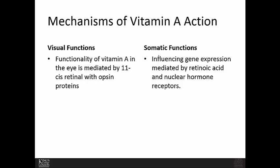The mechanisms of action for vitamin A: it was first identified as vital based on its impact on vision, and its visual functions are very well understood. The functionality of vitamin A in the eye is mediated through 11-cis retinol with the opsin protein. There are also somatic functions of vitamin A with a very large influence on gene expression, mediated by retinoic acid and nuclear hormone receptors.